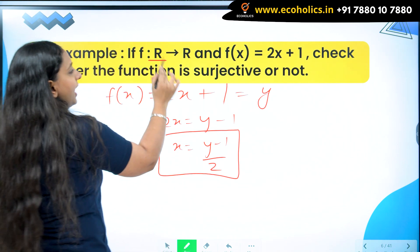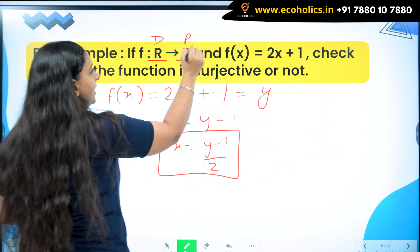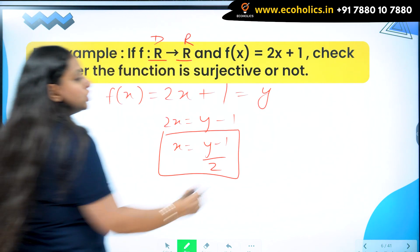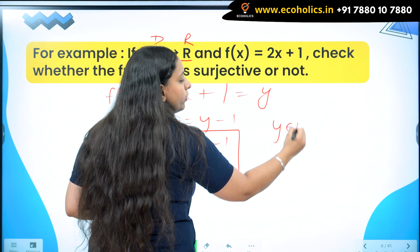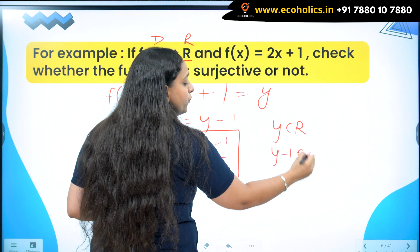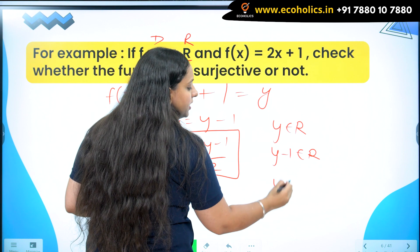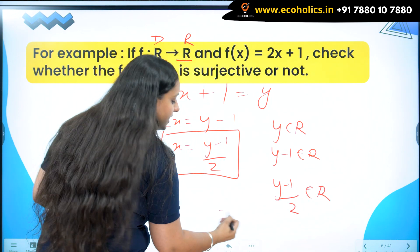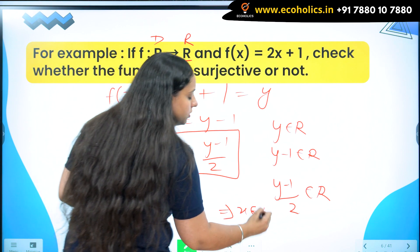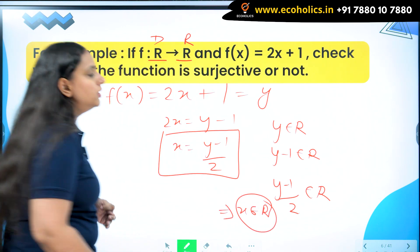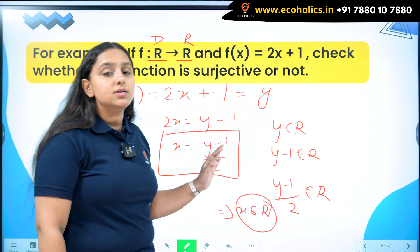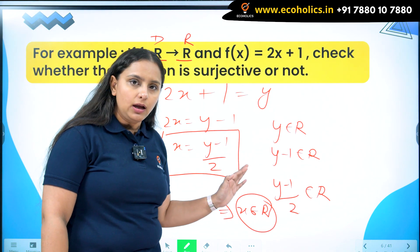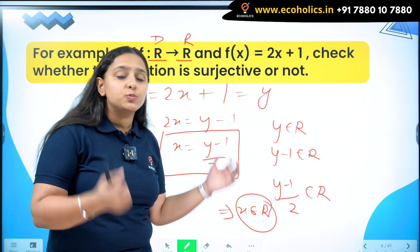This is domain and this is range. Range is also real numbers, domain is also real numbers. If y is going to follow real numbers, y minus 1 is going to follow real numbers and similarly y minus 1 by 2 is also going to follow real numbers. Hence x also belongs to real numbers.